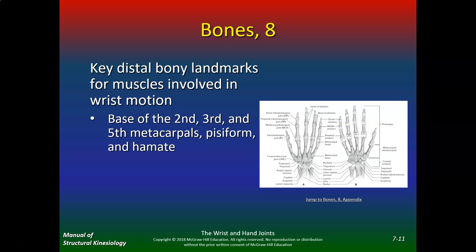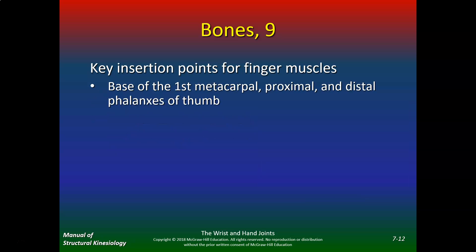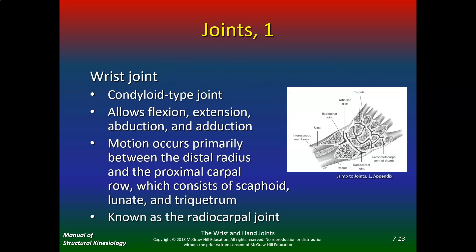Key distal bony landmarks for muscles involved in wrist motion include the base of the second, third, and fifth metacarpals, the pisiform, and the hamate. Key insertion points for finger flexors are the base of the first metacarpal and the proximal and distal phalanges. The wrist joint in general is a condyloid type joint, allowing flexion, extension, abduction, and adduction.